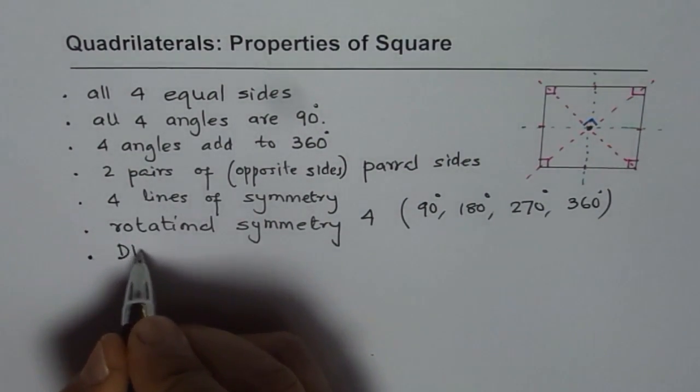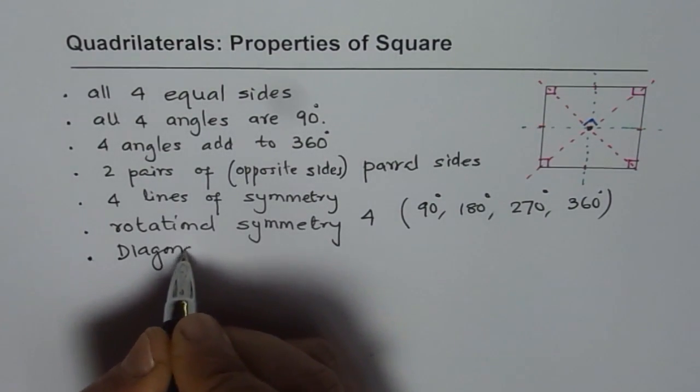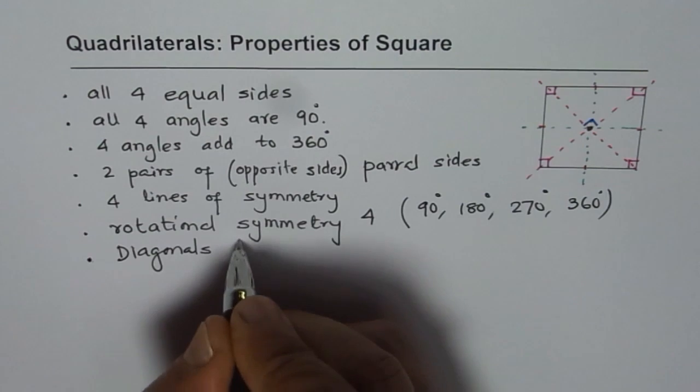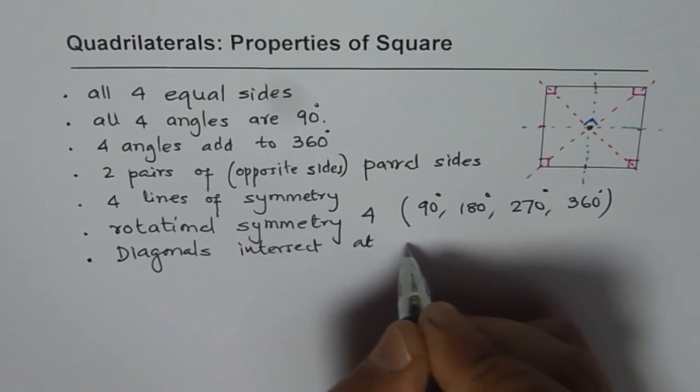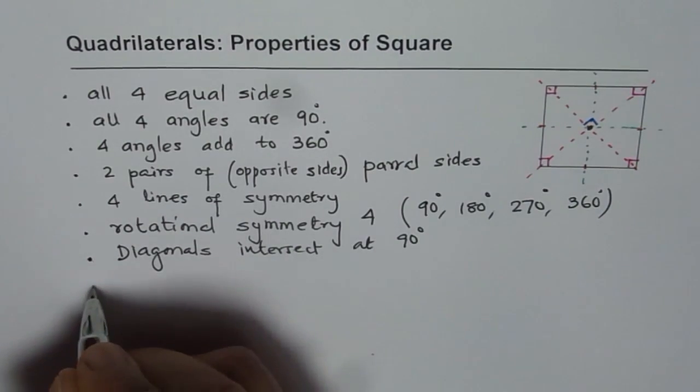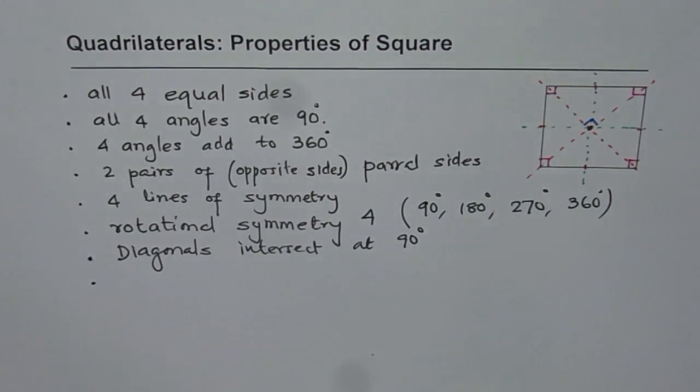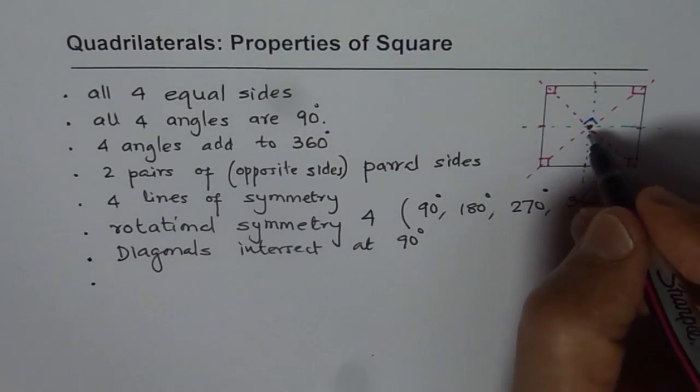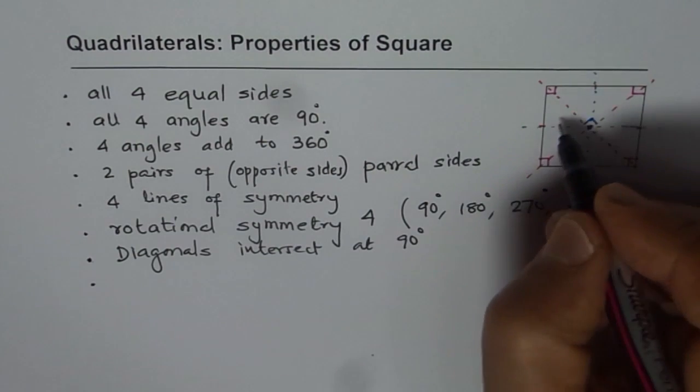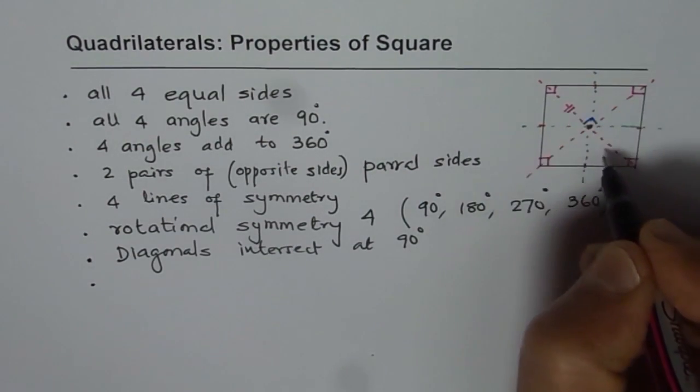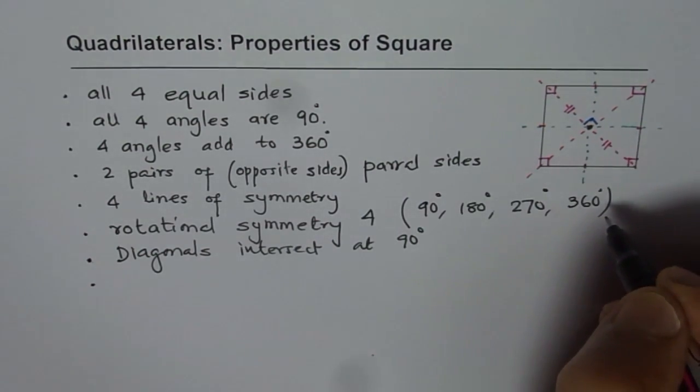So, diagonals intersect at 90 degrees. Now, about the diagonals. When they intersect at 90 degrees, when they intersect at this point, is it the center of the square? Kind of, will you find these two sides of a diagonal equal?